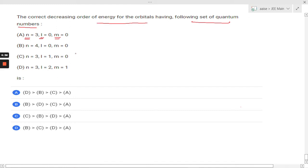Okay, so how are we going to do it? This is completely based on the n plus l rule. And according to n plus l rule, the maximum value of n plus l will be having highest energy of orbital.